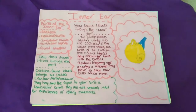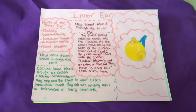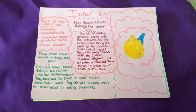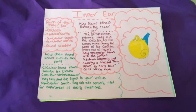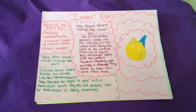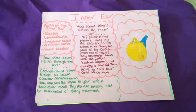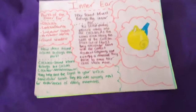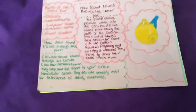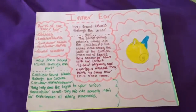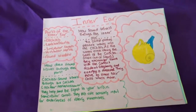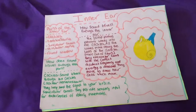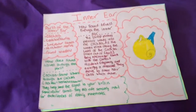Inner ear. The parts of the inner ear are the cochlea, the cochlear nerve, semicircular canals, vestibular nerve, and the round window. How does sound travel through each part? Sound travels through the cochlea and the cochlear nerves.